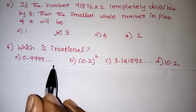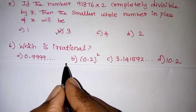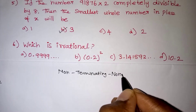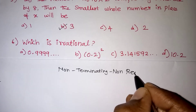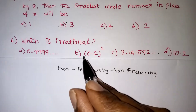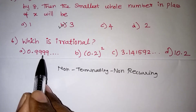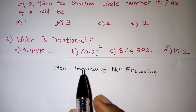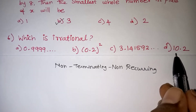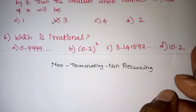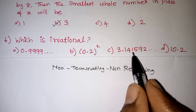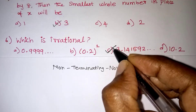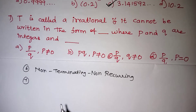Which of the following is irrational? The definition of irrational is a non-terminating and non-recurring number. A repeating number cannot be irrational. The value 0.2 squared equals 0.04, which is terminating — rational. The value 10.2 is also terminating — rational. But 3.141592... is the value of pi, which is non-terminating as well as non-recurring, making it an irrational number — that is the correct answer.